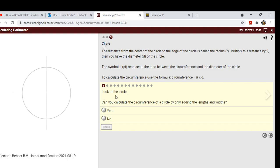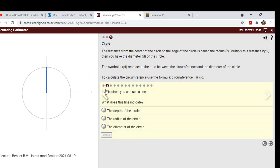So look at the circle. Can you calculate the circumference of a circle by only adding the lengths and widths? No, you cannot. It's a circle. In this circle you can see a line, what does this line indicate? Well, it's the radius from the center point to the outside diameter.